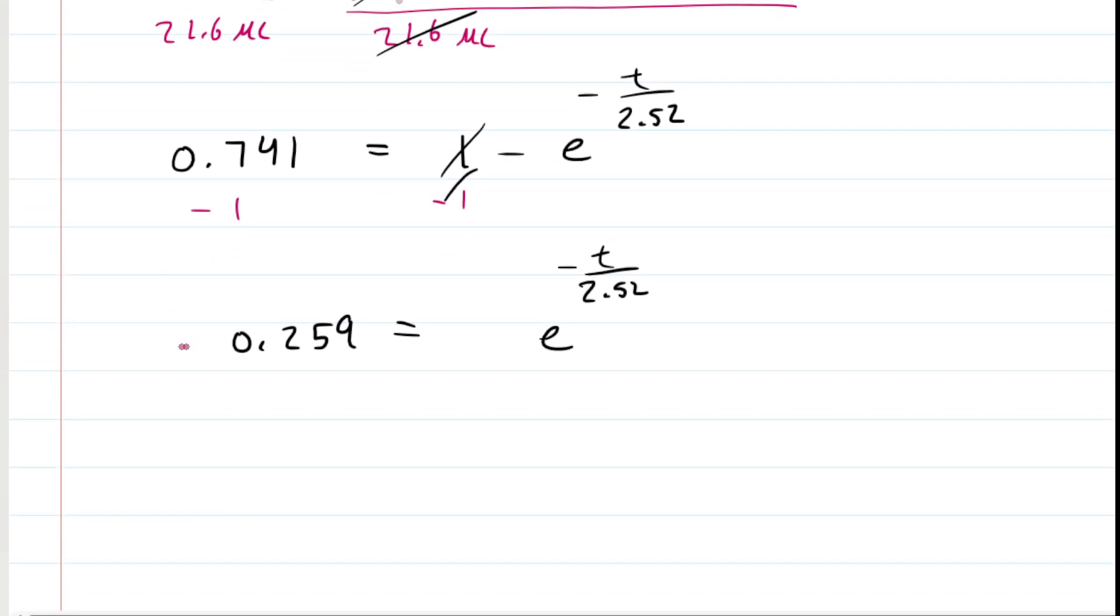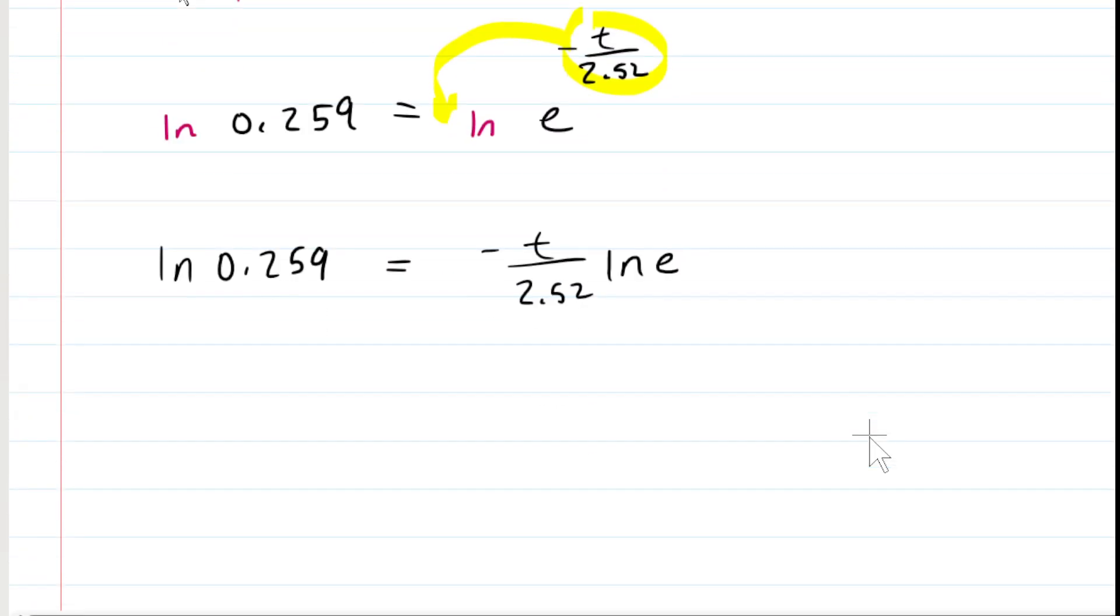And now to solve for time, we're going to take the natural log of both sides. Now doing that would bring this exponent down into the front of the ln of e. Of course, the ln of e is 1. So this fraction times 1 is still just the fraction. So we can get rid of the ln of e. And then finally, we will multiply both sides of the equation by negative 2.52.